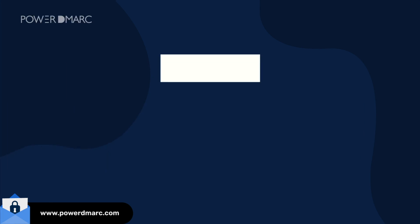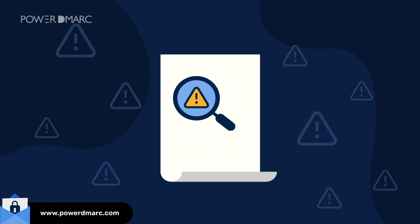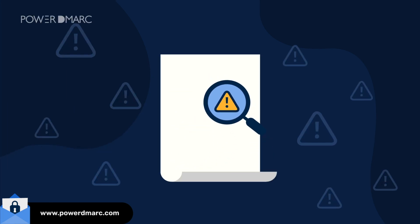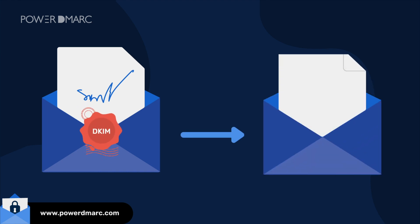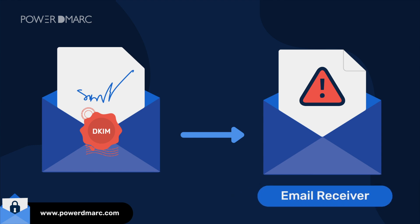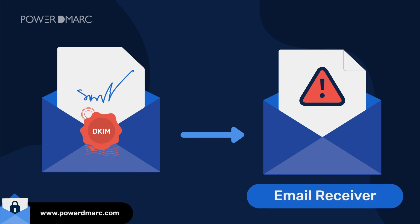Another reason for DMARC failure is the absence of a DKIM signature. In such a case, your email exchange service provider may sign your email with a default signature on your behalf. This may lead to failure in DKIM identifier alignment on your email receiver's side.